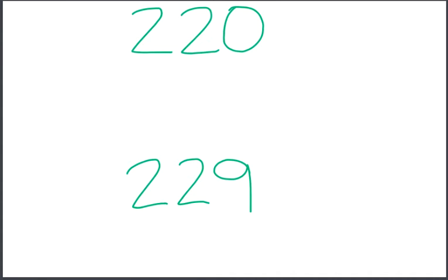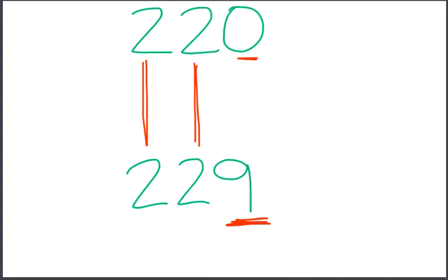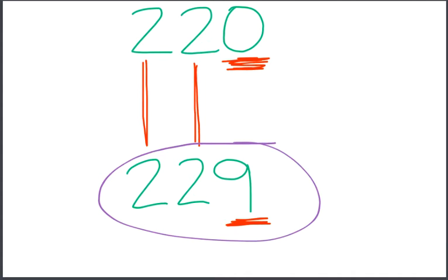Let's look at it this way. I'm displaying the numbers one below the other so that the place value positions are lined up. Hundreds are lined up, tens are lined up. So the hundreds digit is the same — two and two. The tens digit is the same — two and two. If the hundreds digits are the same, each has a value of 200. If the tens digits are the same, each has a value of 20. But the ones digits are not the same. Nine ones is more than zero ones, so 229 is larger than 220.